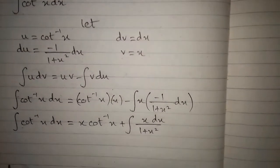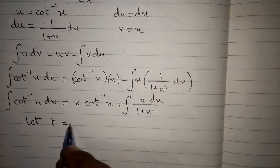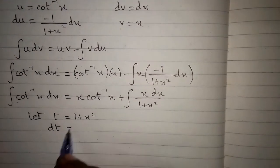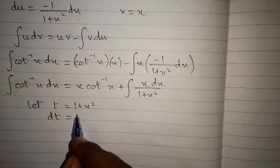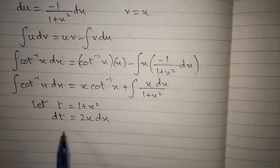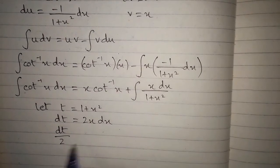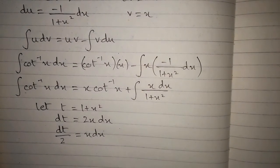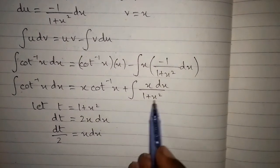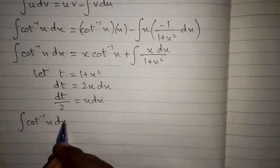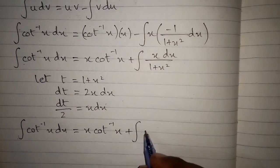To integrate x upon 1 plus x squared, we use substitution. Let t equal 1 plus x squared, then dt equals 2x dx, so dt upon 2 equals x dx. Substituting, the integral of cot inverse x dx equals x times cot inverse x plus the integral of dt upon 2t.